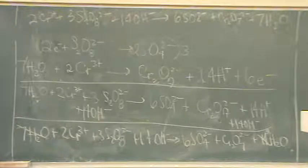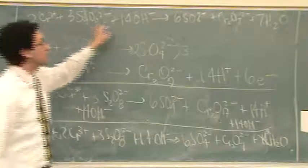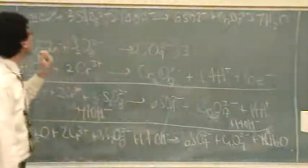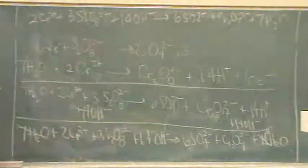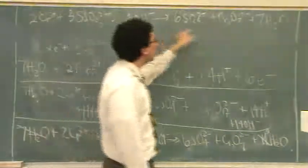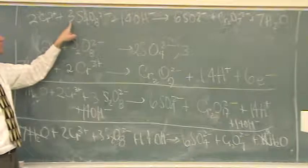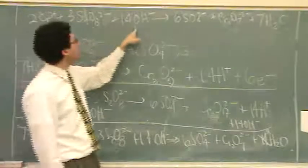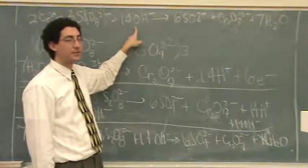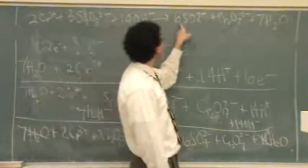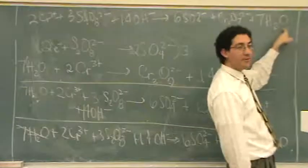You can double check your math if you're unsure. By inspection, there's two chromiums, two chromiums. We've got six sulfurs and six sulfurs. So far so good. 14 H's and 14 H's. And then we'll go, oh my, three times eight, 24, plus 14 is 42. Okay, 42. And then six times four, 24, plus seven, plus seven, oh, 42.